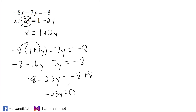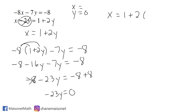We substitute 0 in for y into one of the original equations. Using the equation we rewrote — x equals 1 plus 2y — we substitute y with 0: x equals 1 plus 2 times 0, which is 1 plus nothing, so x equals 1. We know that x equals 1 and y equals 0, meaning the point of intersection for this system is (1, 0).